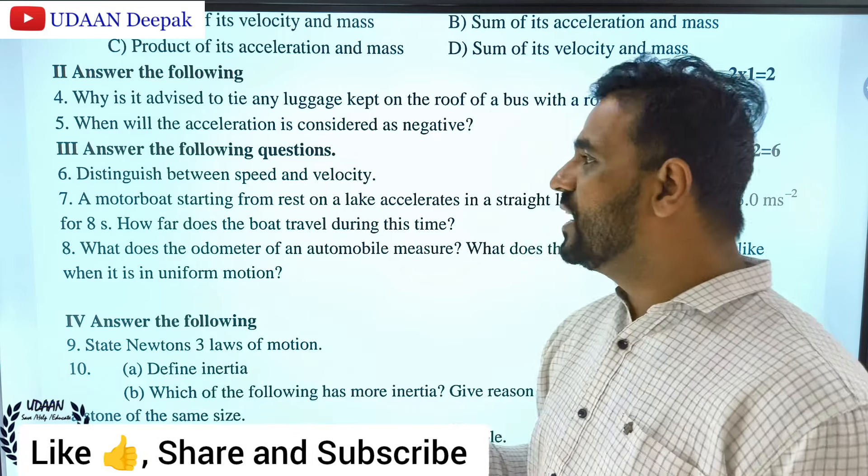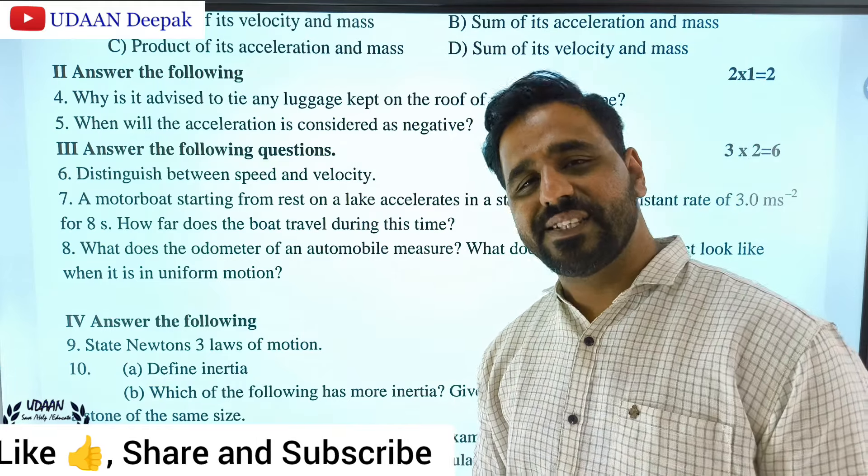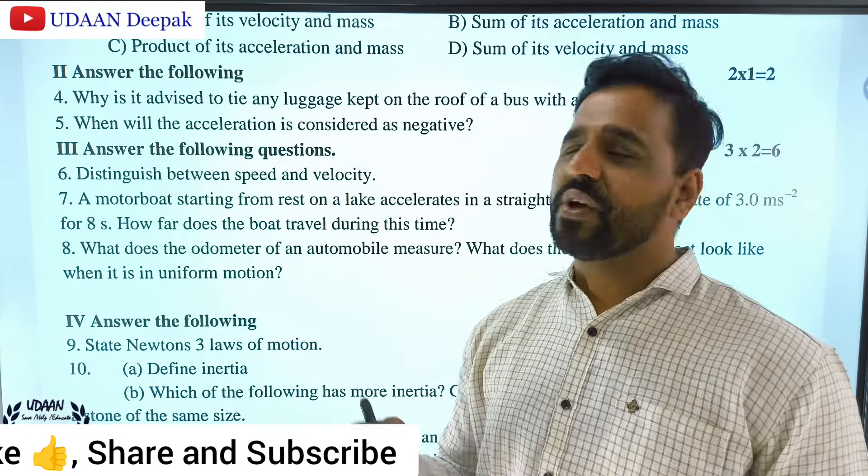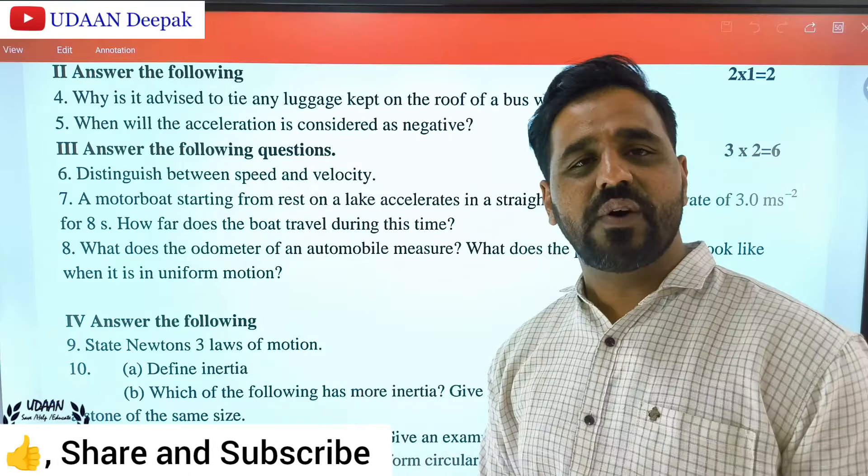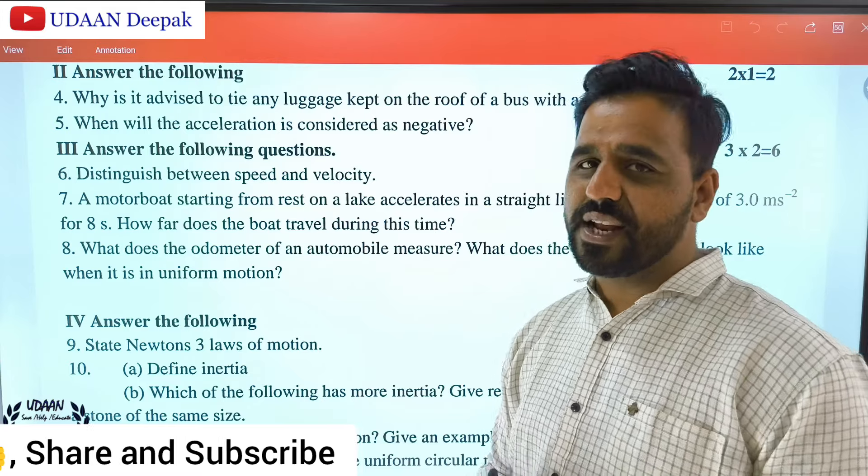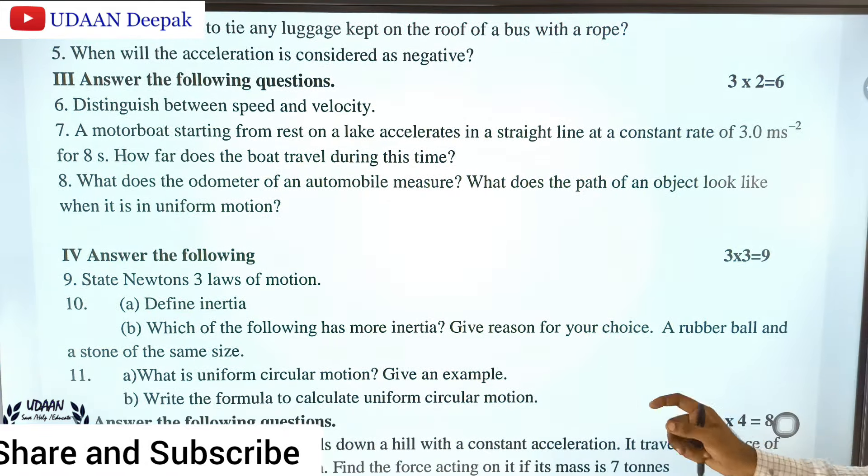Distinguish between speed and velocity. Speed is distance divided by time, whereas velocity is displacement divided by time. Speed is the rate of change of distance, velocity is the rate of change of displacement. Speed is scalar, velocity is vector.